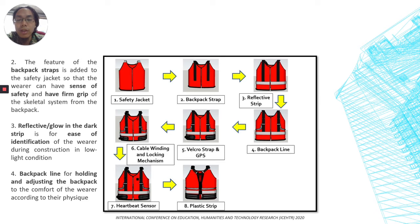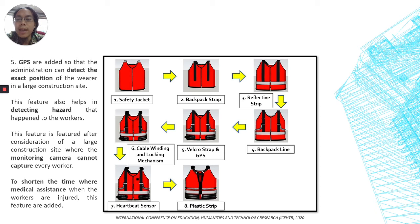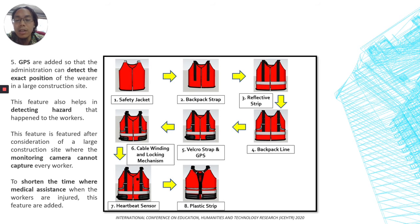A reflective or glow-in-the-dark strip is included for ease of identification of the wearer during construction in low-light conditions. The backpack line is for holding and adjusting the backpack to the comfort of the wearer according to their physique or body dimension. A GPS module is added so that the administration can detect the exact position of the wearer on a large construction site. This helps reduce hazards to workers who may not always be visible on camera, and can shorten response time when medical assistance is required if any worker is injured.